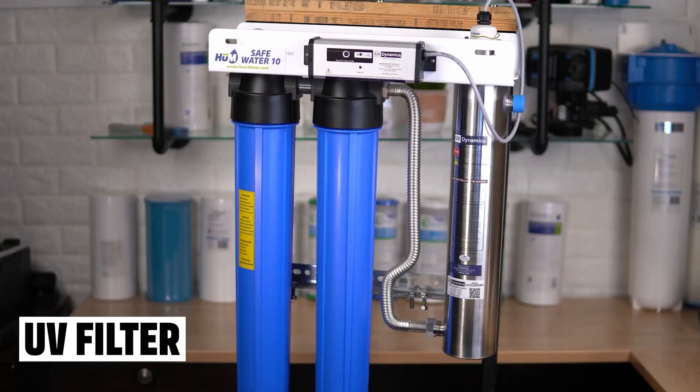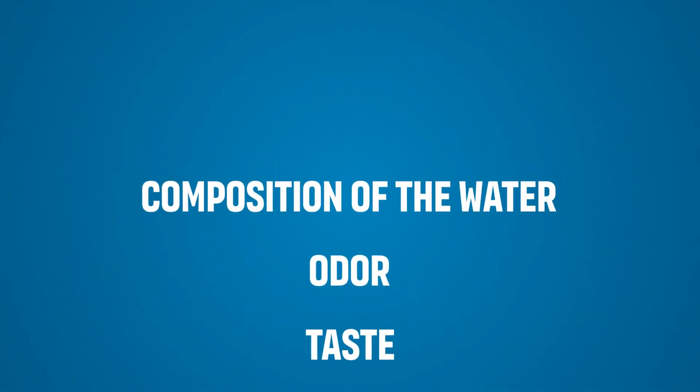UV systems work continuously as water flows through the UV chamber. The water is disinfected in real time, ensuring that every drop passing through the system is exposed to UV light. This provides ongoing protection from harmful pathogens. Unlike chemical treatments like adding chlorine, UV filtration doesn't leave any residual byproducts or chemicals in the water. The UV process only kills pathogens without affecting the taste, odor, or composition of the water.